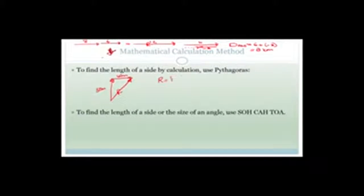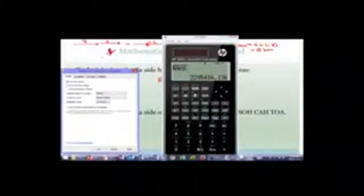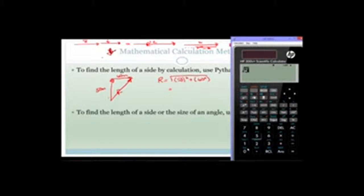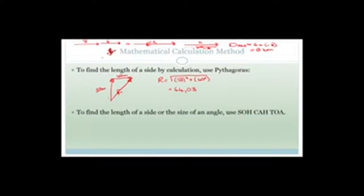Because we're dealing with right angles, we can use Pythagoras. R is equal to the square root of 50 squared plus 40 squared. Using the calculator, we get the square root of 50 squared plus 40 squared equals 64.03. So the magnitude of the resultant is 64.03 meters, but we now need to find the angle — the direction from north, or the bearing.